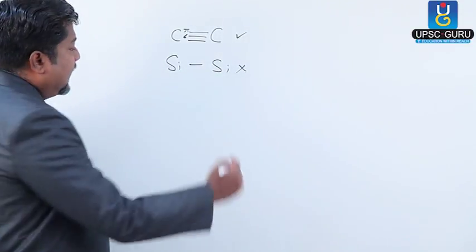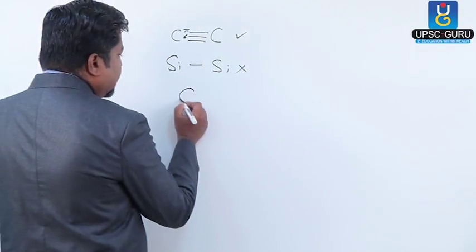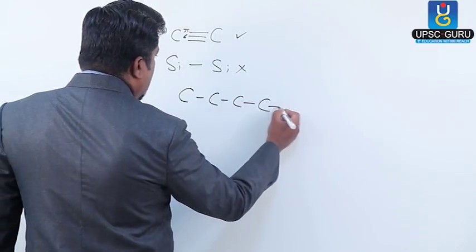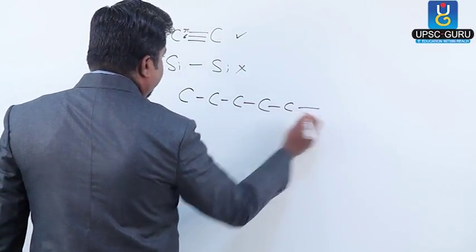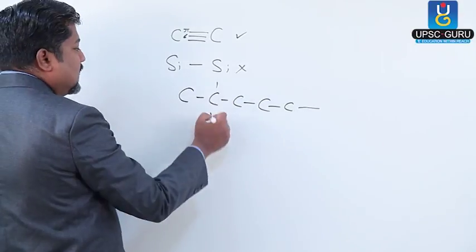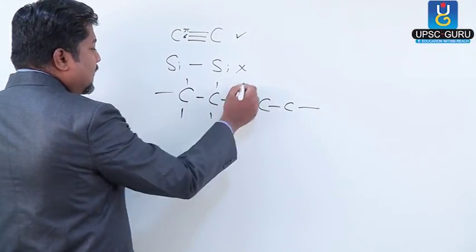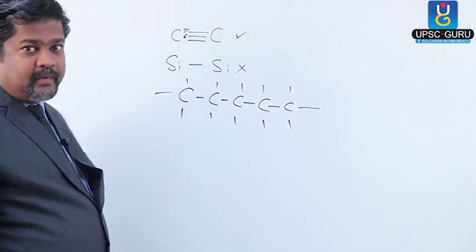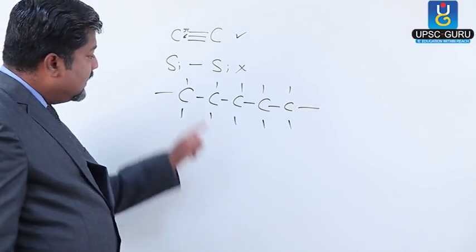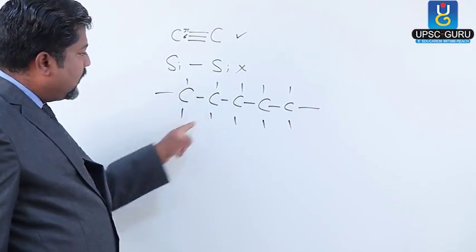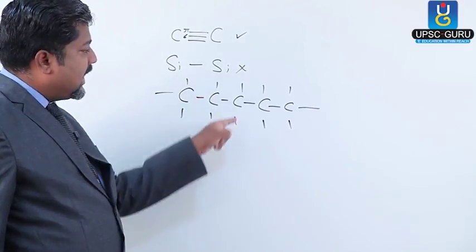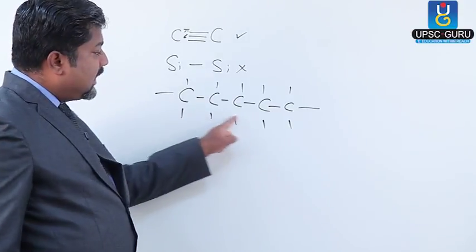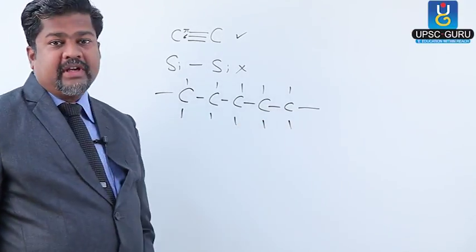The second thing is that carbon can form long chains — carbon, carbon, carbon, carbon bonds. Now tetravalency means four bond formation. So every carbon is having four bonds, whereas a carbon-carbon-carbon-carbon long chain is there. Carbon having this same-element chain-forming power with another carbon — this we are calling catenation power.